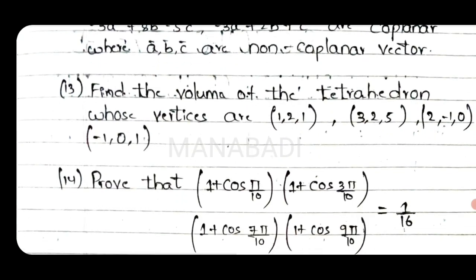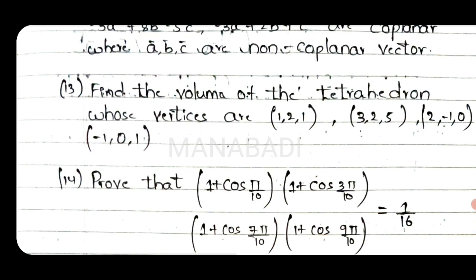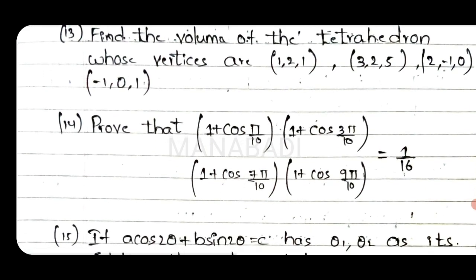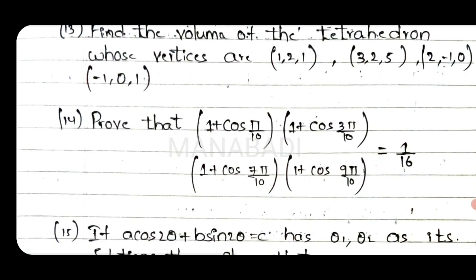Thirteenth question: Find the volume of the tetrahedron whose vertices are A, B, C, D. Fourteenth question: Prove that (1 plus cos π/10)(1 plus cos 3π/10)(1 plus cos 7π/10)(1 plus cos 9π/10) equals 1 by 16.